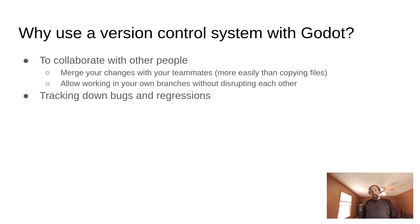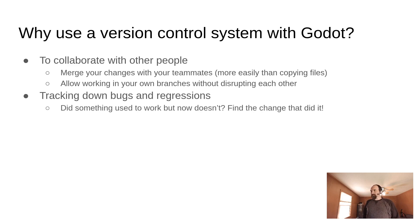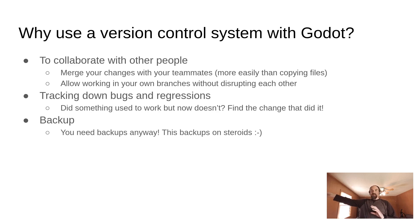Version control helps with tracking down bugs and regressions. If a bug appears at some point that didn't used to exist, you can keep rolling back different revisions to find where that bug was introduced. There's actually a tool in Git called bisect that helps automate some of that process so you don't have to go through every single revision manually. And backup — you have to back up your project anyway. Because you're pushing your Git repository to a third-party location like GitLab, it basically is a backup — but it's a backup on steroids, because it's a backup with all of your changes over time as well.